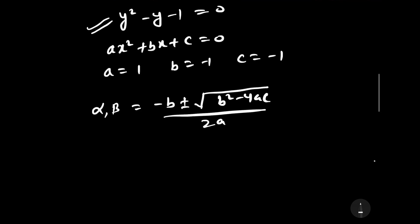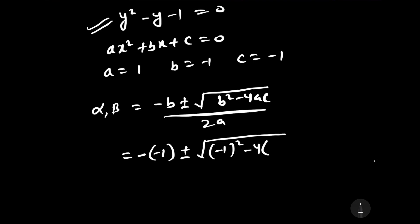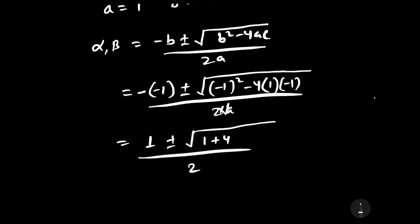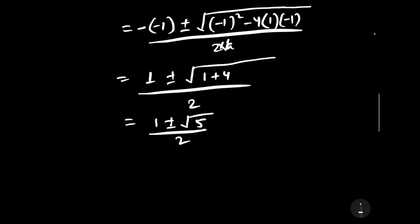Substituting the values: b equals minus 1, so minus b equals 1; b squared equals 1; minus 4ac equals minus 4 times 1 times minus 1 equals plus 4. So the roots are (1 plus or minus square root of 5) divided by 2. These are the values of y — the roots of y squared minus y minus 1 equals 0.